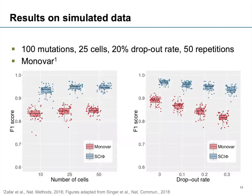Here are some results on simulated data. We simulated 100 mutations in 25 cells with a dropout rate of 20% and 50 repetitions, and compared ourselves to Monovar — the first single-cell mutation caller able to use information across all cells. As you can see, using the phylogenetic structure actually helps: we have a performance gain in the F1 score, almost independent of the number of cells. And importantly, if we increase the dropout rate, our approach doesn't suffer as much, because it can use information from cells in the same clade to still infer a mutation even where no reads were observed.